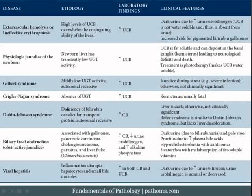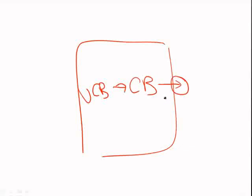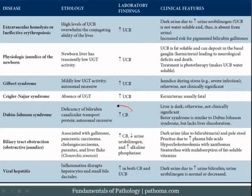Dubin-Johnson syndrome can lead to jaundice. This is a deficiency of the bilirubin canalicular transport protein, inherited as autosomal recessive. The liver hepatocyte takes unconjugated bilirubin and conjugates it, but in order to dump it into the bile canaliculi it needs the canalicular transport protein. If this protein is deficient, conjugated bilirubin builds up within the liver cell and leaks out into the blood, giving you a conjugated bilirubinemia.